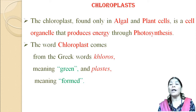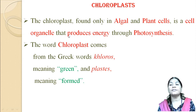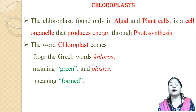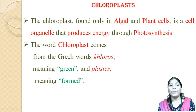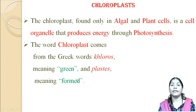Chloroplast forms only in algal and plant cells. We know that chloroplast is the plant organelle that produces energy through the process of photosynthesis. The word chloroplast comes from the Greek words 'chloras' meaning green, and 'plast' meaning form. These two words come together to coin the term chloroplast.